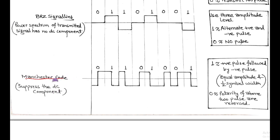Next line code is Manchester code or split phase code. This code also suppresses the DC component using rectangular pulse of half width and constant amplitude. Symbol 1 is represented by positive pulse followed by a negative amplitude pulse. And for symbol 0, the negative pulse is followed by a positive pulse, just reversing the polarity.